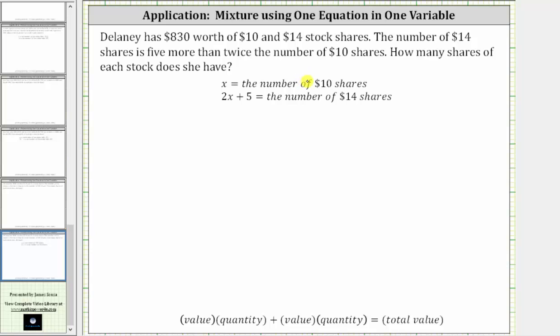And now from here, again, because the number of $14 shares is five more than twice the number of $10 shares, we can use the expression 2x plus 5 for the number of $14 shares.